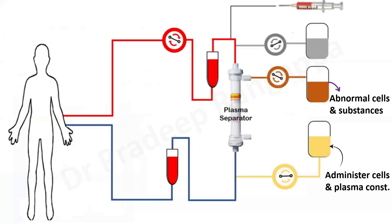Plasmapheresis is similar to dialysis, where blood is drawn and passed through a plasma separator. As the name sounds, this separates plasma from the red blood cells. The abnormal cells and substances intended to be removed are removed, and because the plasma is purified or certain contents are removed, a replacement fluid needs to be given. That replacement fluid could be plasma, albumin, crystalloids, or colloids, and can also consist of certain cells and plasma constituents that need to be replenished.